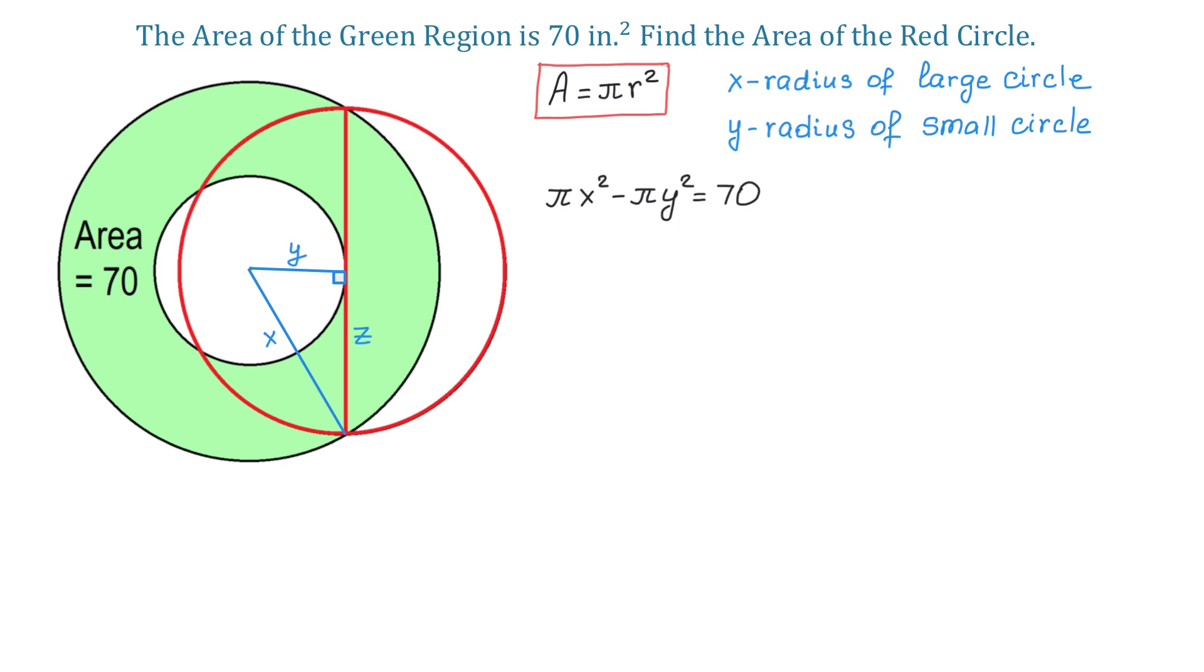Then, according to the Pythagorean theorem, we can say that Z equals the square root of the hypotenuse squared minus the other side squared. And this expression represents the radius of the red circle.